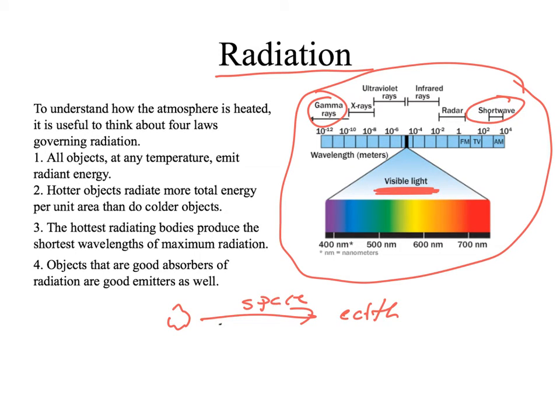There are four laws that govern radiation. First, all objects radiate energy. Hotter objects tend to radiate more total energy than colder objects. The hottest radiating bodies produce the shortest wavelengths of maximum radiation. So as they get hotter, the wavelengths get a little bit shorter. And finally, objects that are good absorbers of radiation are good emitters as well. These four laws help us work with radiation.